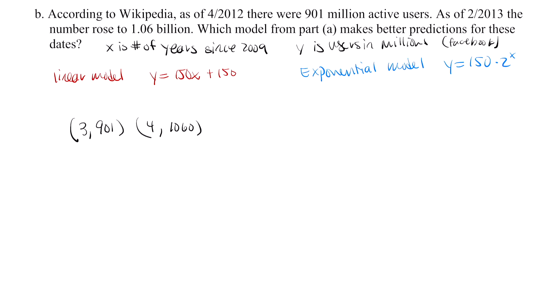Let's plug these numbers into our models. First, let's test the linear model. So I'm going to write 150 times 3 plus 150 here and see how close I get to 901. This gives me 600. We know the point was actually 901. Now let's try the exponential model with this same data point. So I'm going to write 150 times 2 cubed, and that gives me 1,200.